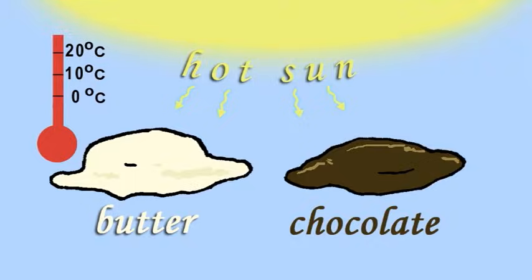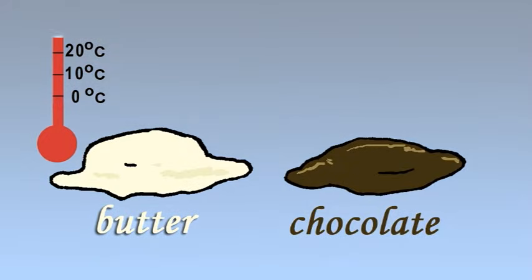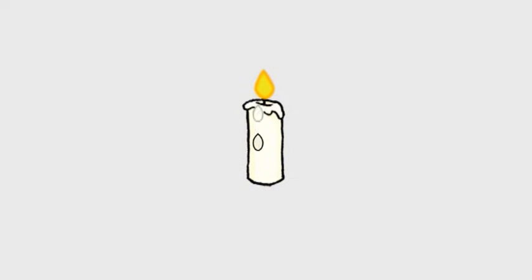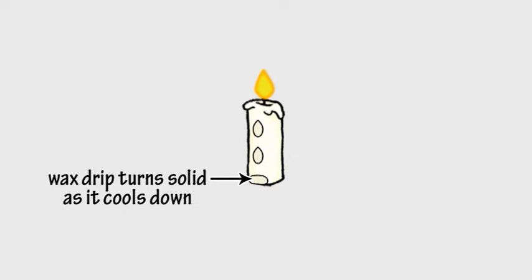Similarly, if you take the melted chocolate and butter out of the hot sun and leave them in the cool shade, they will harden again. And the drips of molten candle wax will solidify once they have run down the side of the candle and have cooled away from the hot flame at the top of the candle.